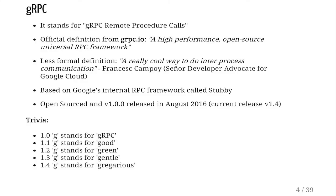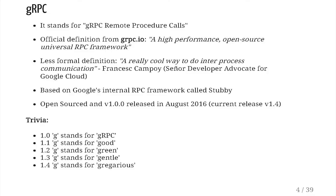What it stands for — it started out version one, the G stood for gRPC remote procedure calls. On the official definition, it's a high performance open source universal RPC framework. I'm not sure why they chose the word framework, because especially in the JavaScript world it's quite a swear word these days. It came out of Google; it was based on their internal system they used for years, called Stubby. They open sourced it — version one, August 2016.